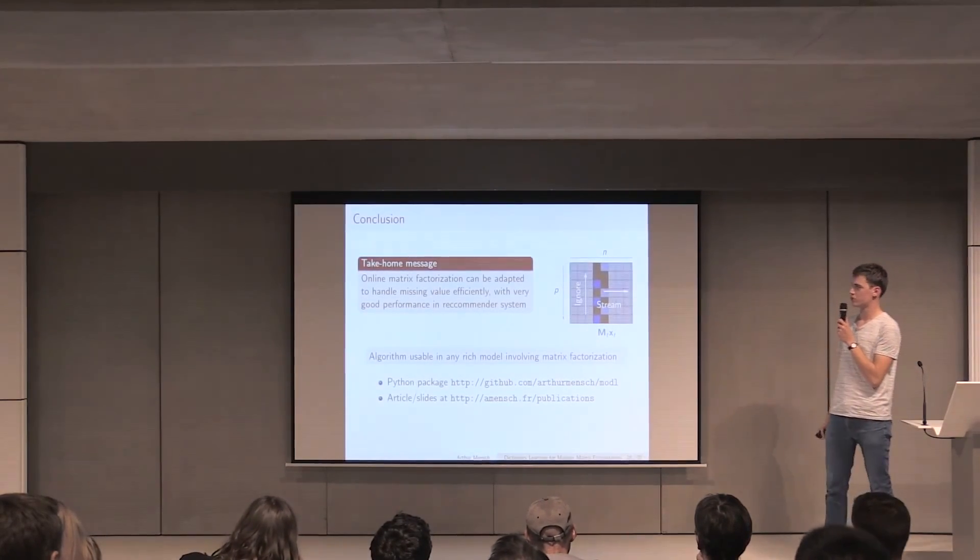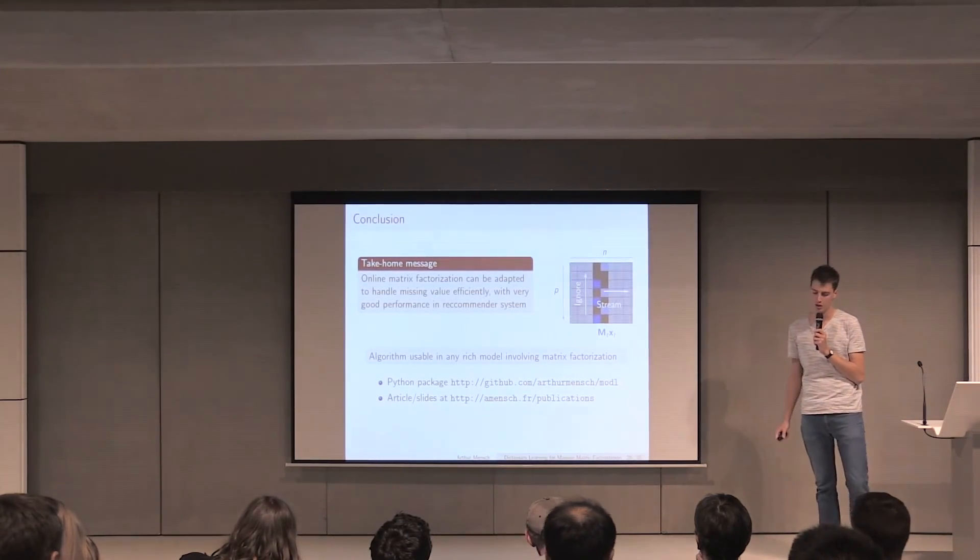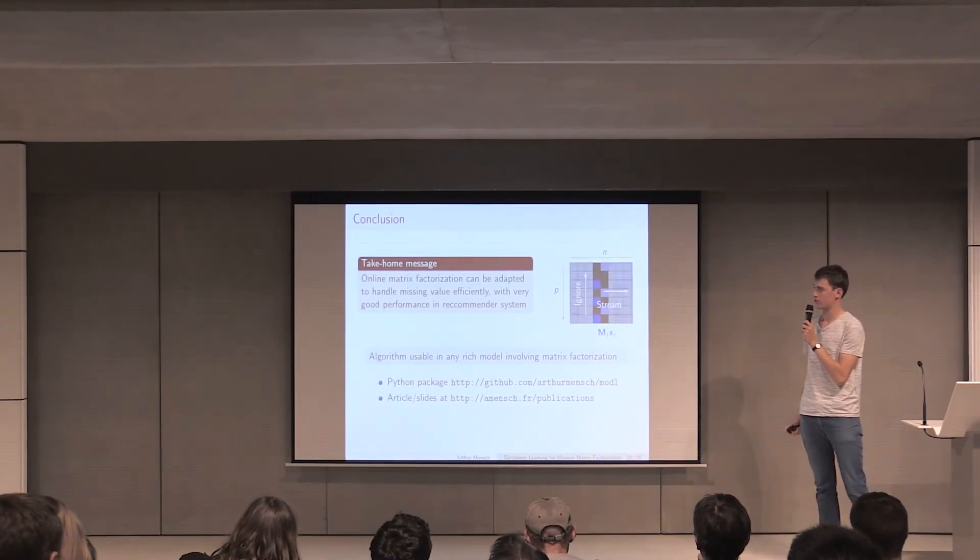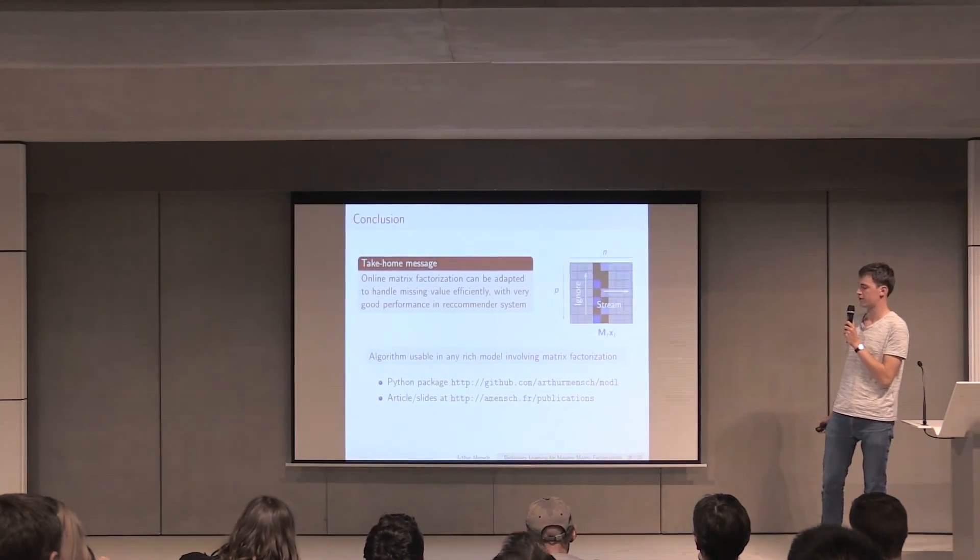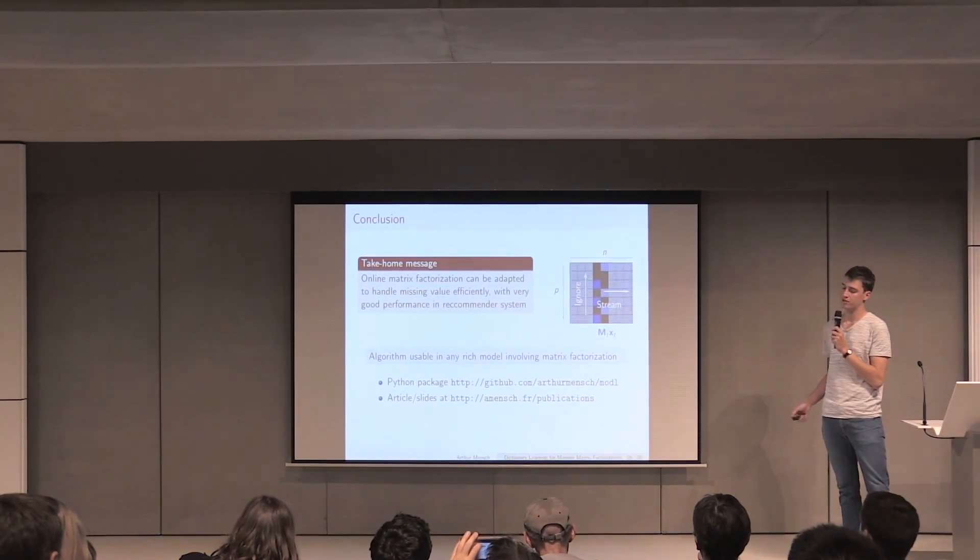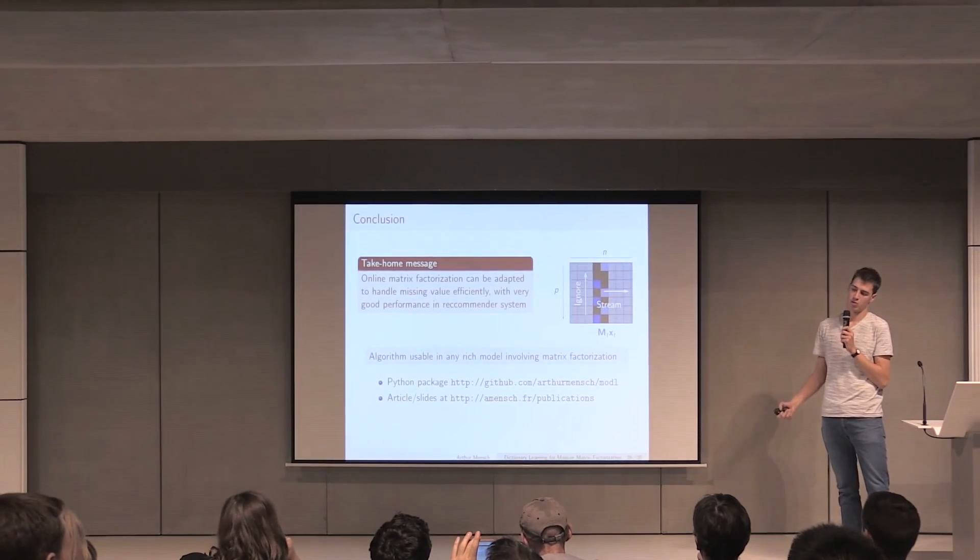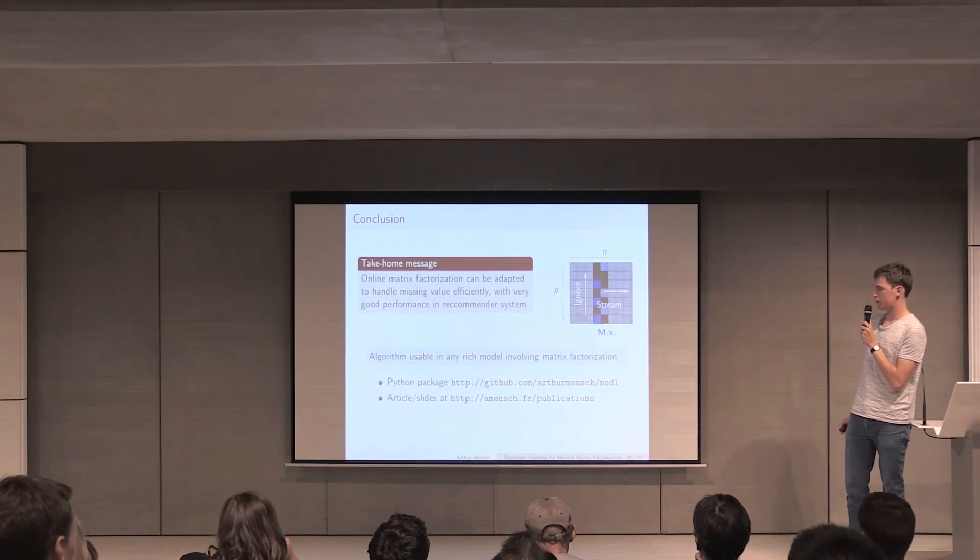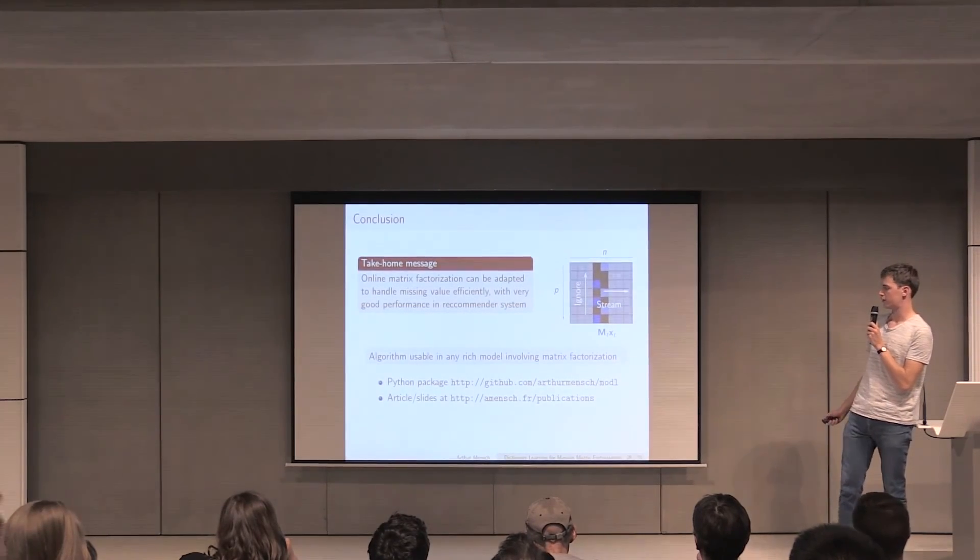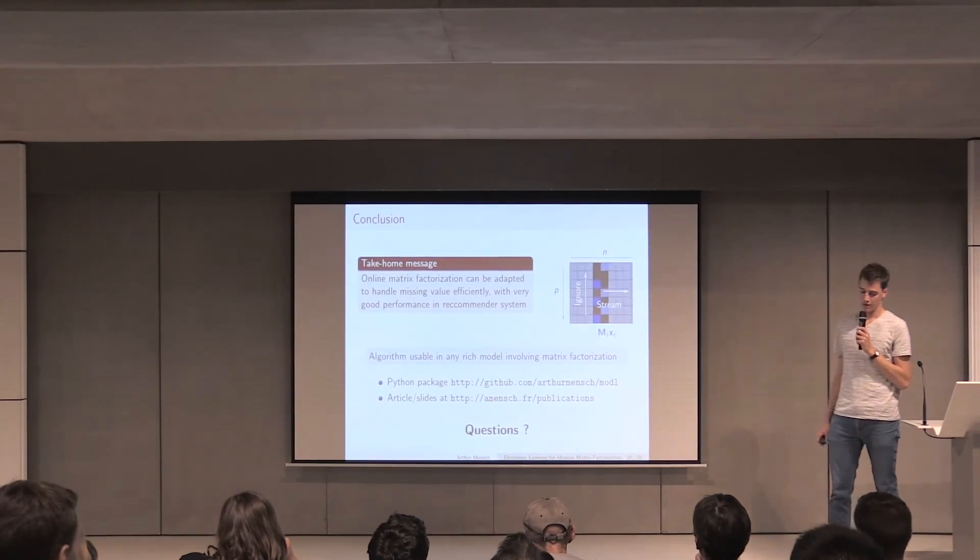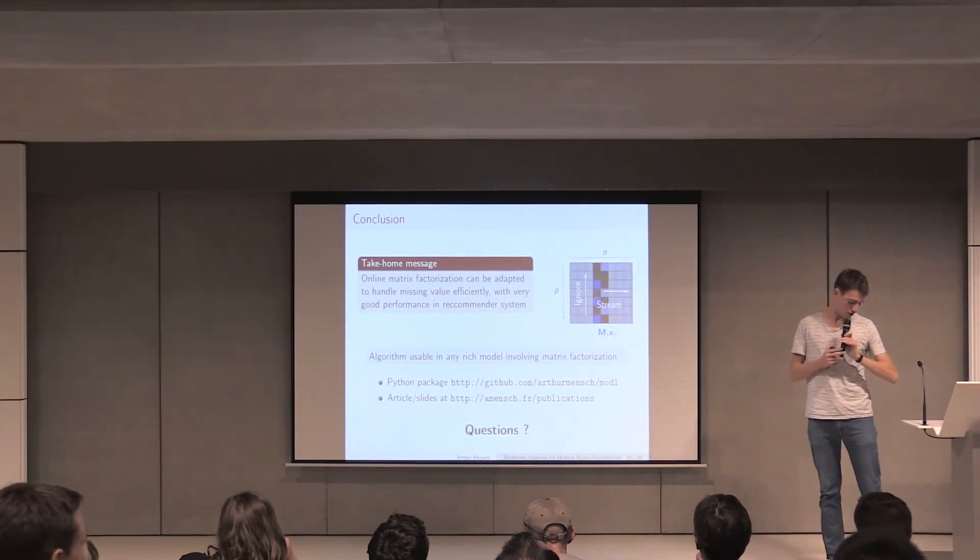In conclusion, the take-home message would be that online matrix factorization can actually be adapted to face recommender system problems and to handle missing values efficiently with very good performance in recommender systems. The algorithm is usable in any rich models that involve matrix factorization, so this encompasses many things. There is a Python package available for reproduction and also the article and the slides are available here. I will happily answer some questions. I don't know how I am doing on time.